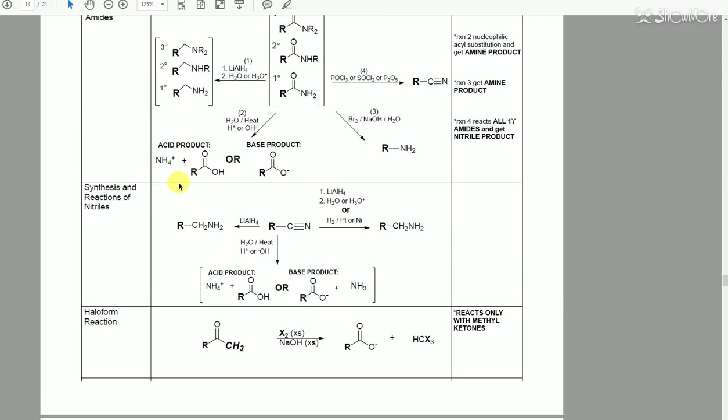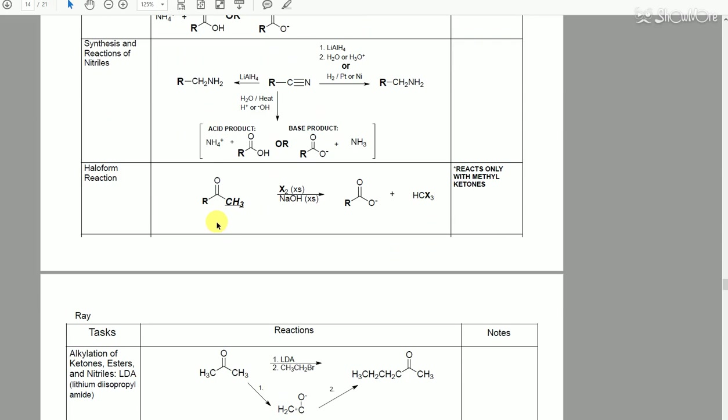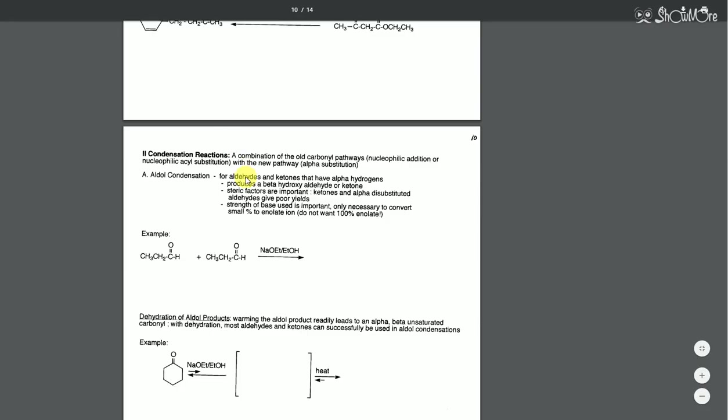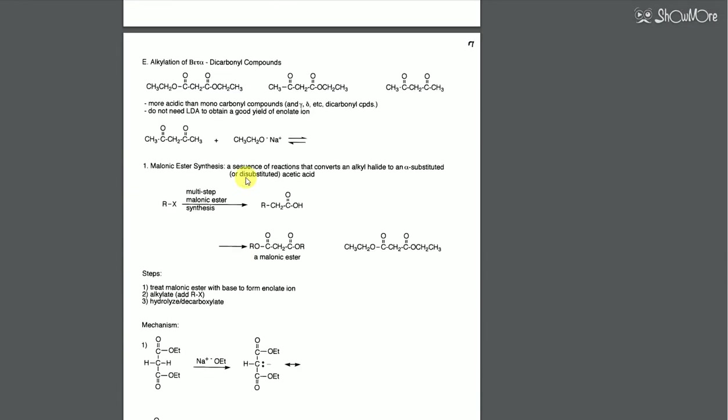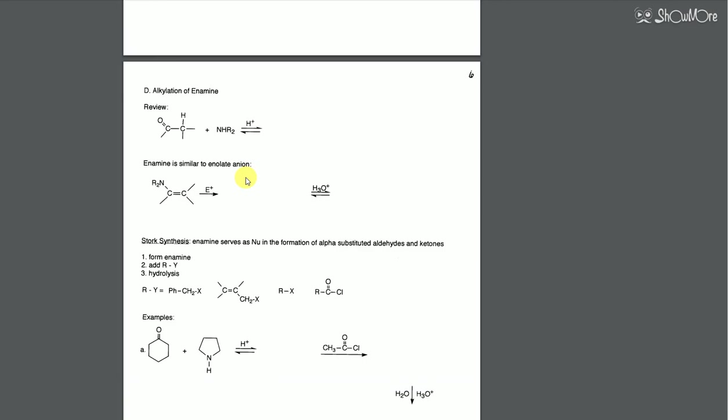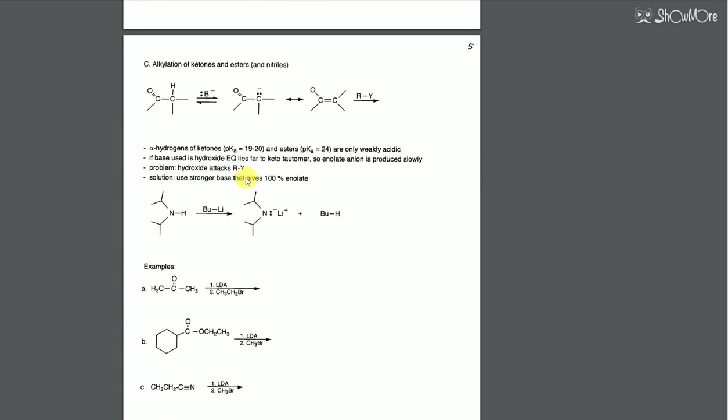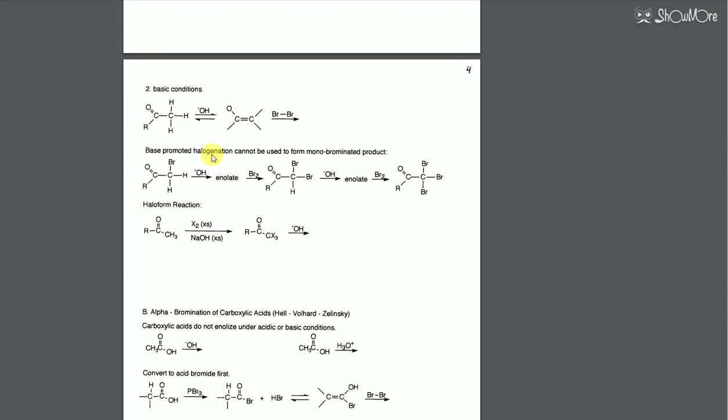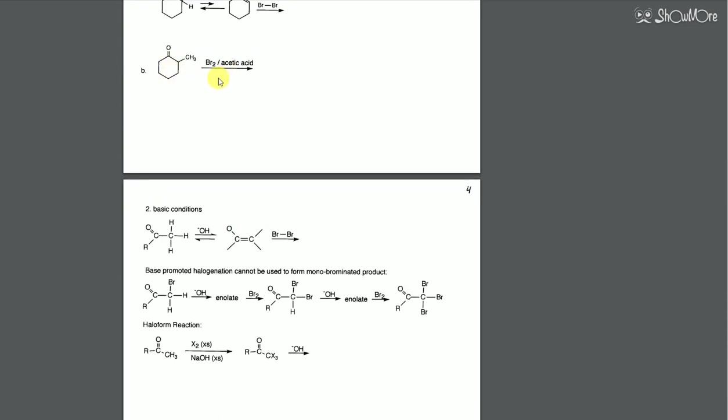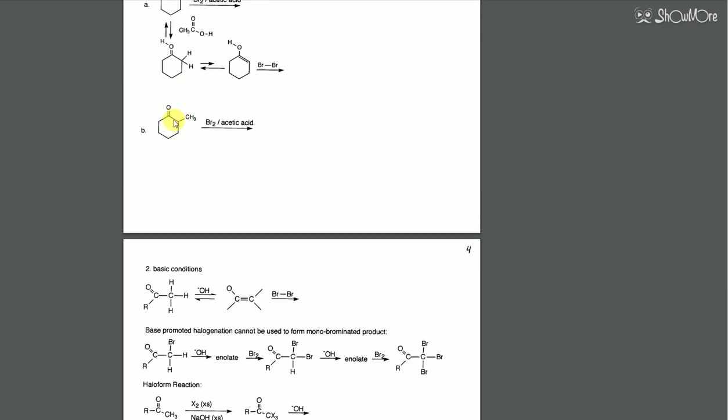The real reaction that you need to know is actually a reaction where, let me look at her notes real quickly. Alright, these are Bean's notes from the class. And the real reaction that you need to know is this reaction right here, where we use Br2 and acetic acid. So Br2 and acetic acid is going to brominate the alpha position of the most substituted carbon on the carbonyl.